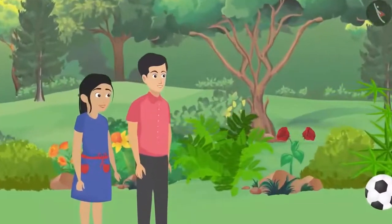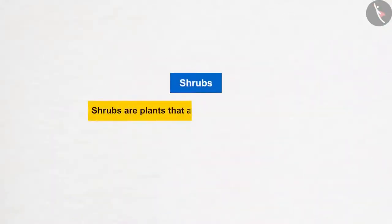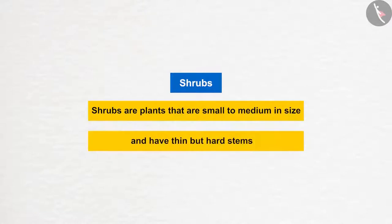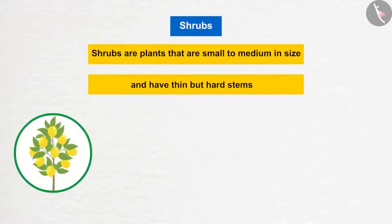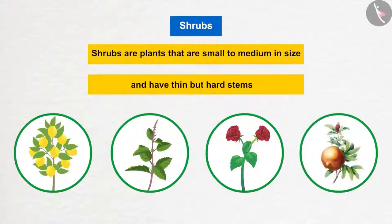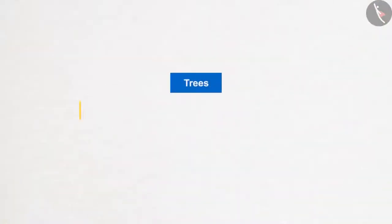Pushpa explains shrubs: these plants are small to medium in size and have thin but hard stems. The branches of these stems originate from near the ground. Lemon, basil, rose, and pomegranate are some examples of shrubs.